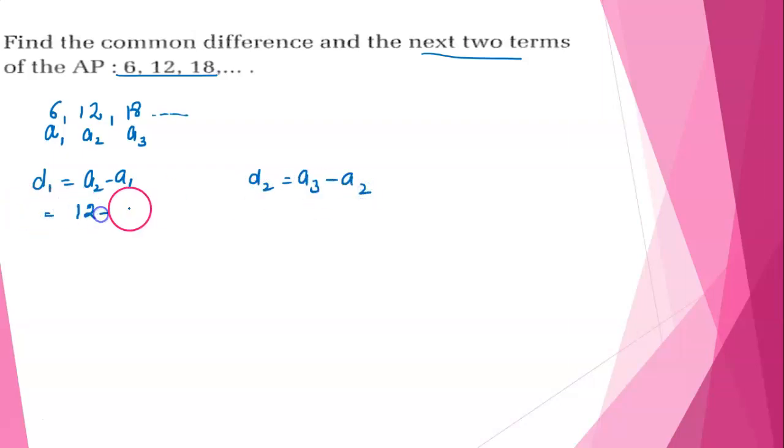So A2 is 12 minus A1 is 6, so D1 is 6. And A3 is 18 minus 12, which equals 6. So the common difference is 6.